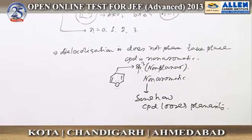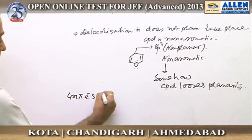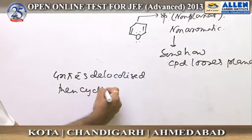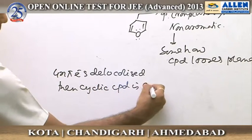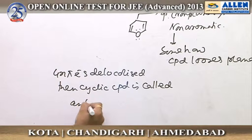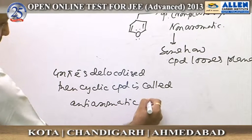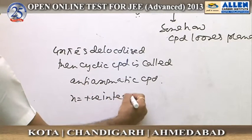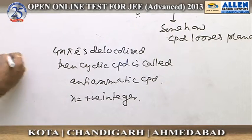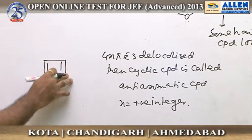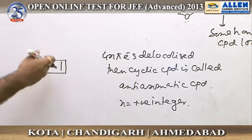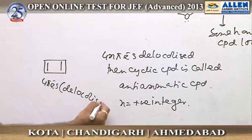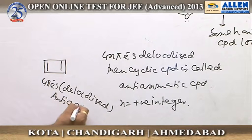If a cyclic compound has 4n pi electrons that are delocalized, it is called an anti-aromatic compound, where n is a positive integer. For example, this cyclic compound has four pi electrons that are delocalized, and by definition it is anti-aromatic.